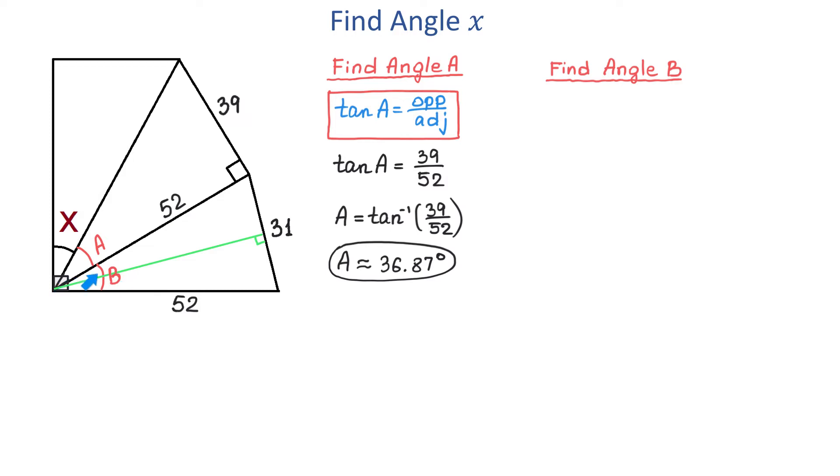Here we have a right triangle formed and we can find this side by dividing 31 by 2. So 31 divided by 2 equals 15.5. This acute angle here is half of angle B and we can call it B over 2.